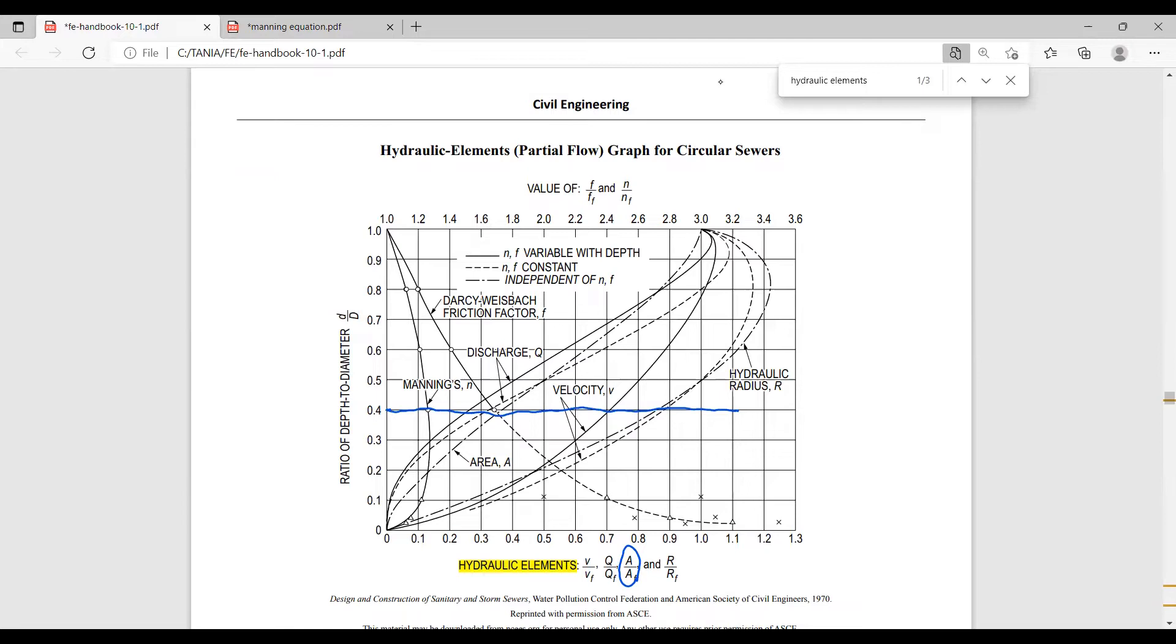Meaning that area over area of flow is—I will go to—approximately 0.37.